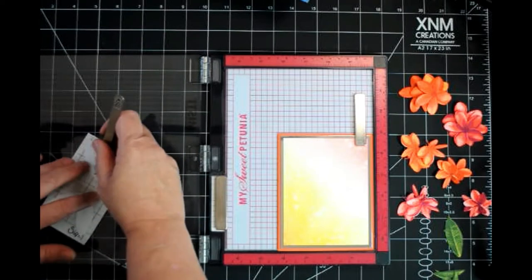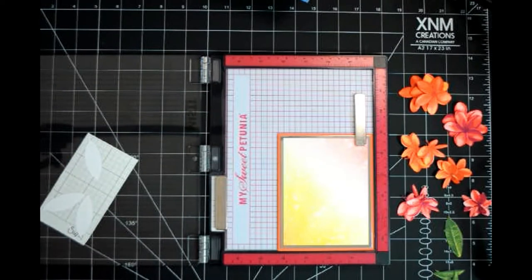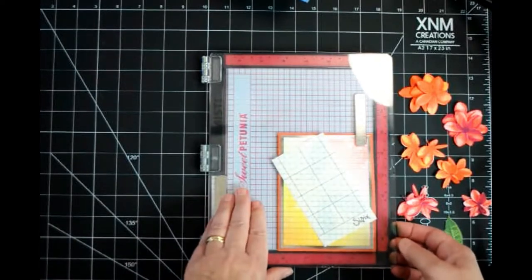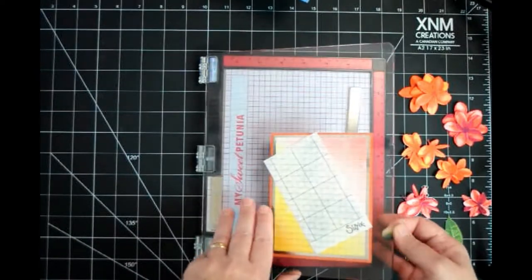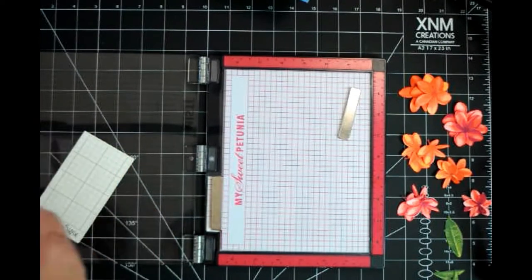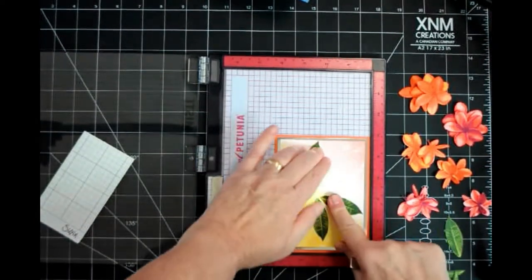When all the adhesive backing has been removed, close the lid of the stamp platform and press firmly again. It is okay if the entire card lifts up when reopening the lid of the stamp platform. Just gently remove the card and now we have leaves that are attached to our duplicate card.